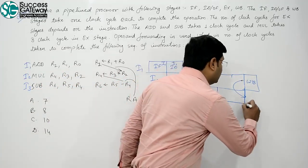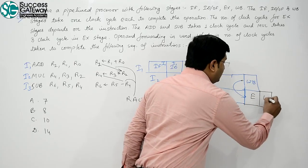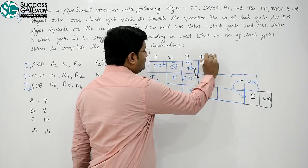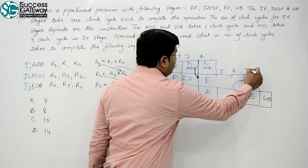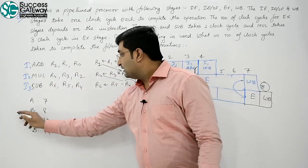Next, uske baad it is a subtraction, toh execution ek clock lega aur write back toh ek clock aur lagegi. Ek, do, teen, char, five, six, seven, eight. Eight number of clocks.